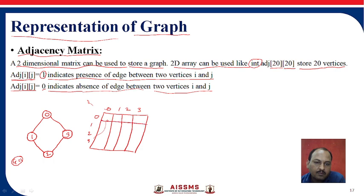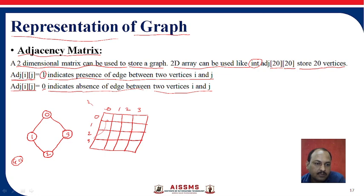We are representing rows and columns to store the information into the matrix. According to the condition, 1 indicates the presence of an edge between two vertices. Now, 0 to 0 — is there any self loop? No, so we insert 0. Is there connectivity from 0 to 1? Yes, so we put 1. Is there connectivity from 0 to 3? Yes, so it represents the edge between 0 and 3, and we represent 0 to 2 accordingly.